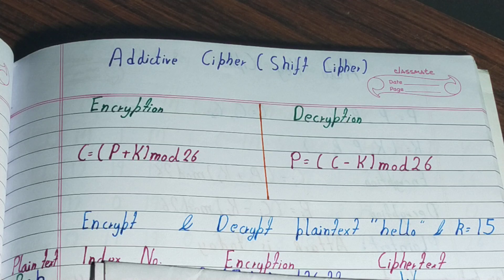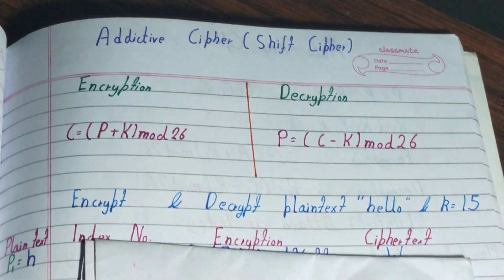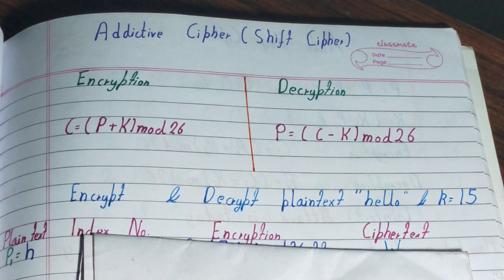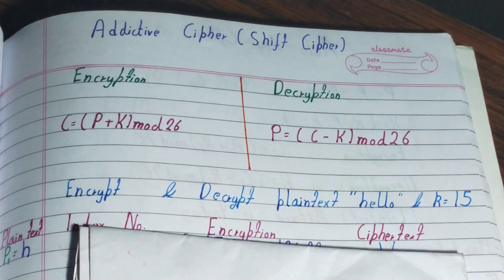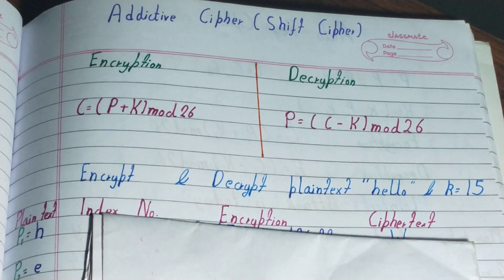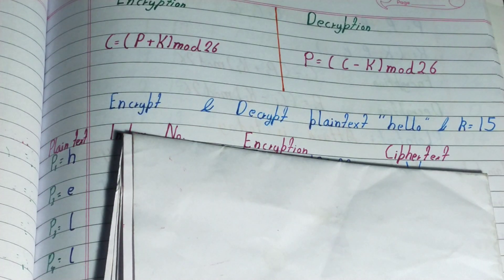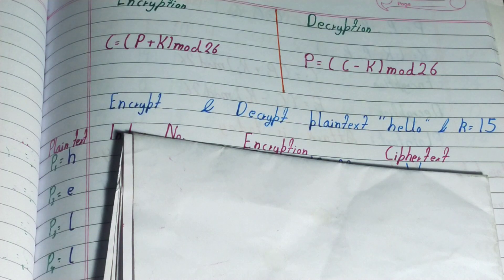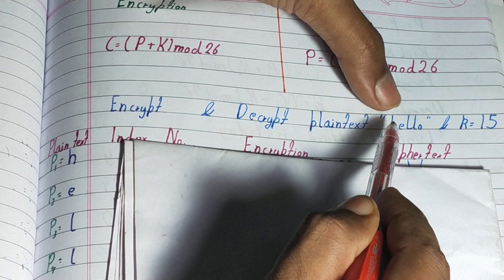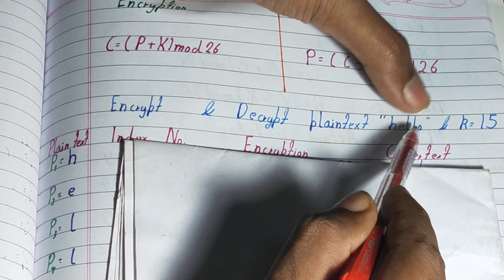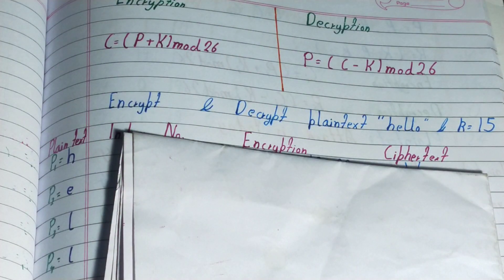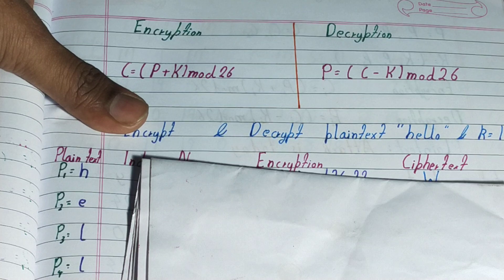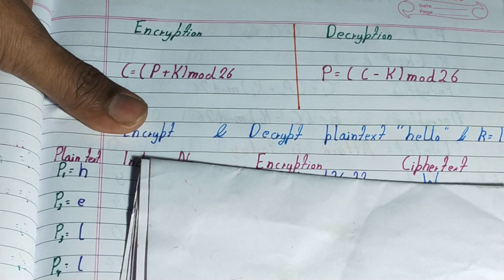Let's solve an example to understand this better. We need to encrypt and decrypt the plaintext 'HELLO' with key k equal to 15. Each letter is encrypted individually — H, then E, then L, then L, then O. So we'll make a plaintext column and write all the letters individually: H, E, L, L, O.